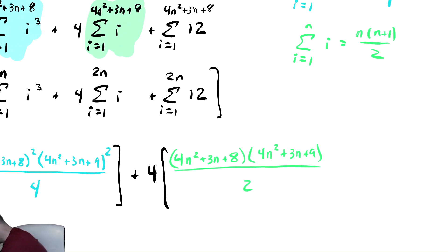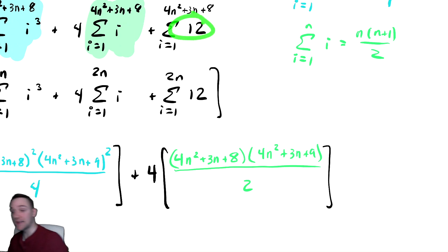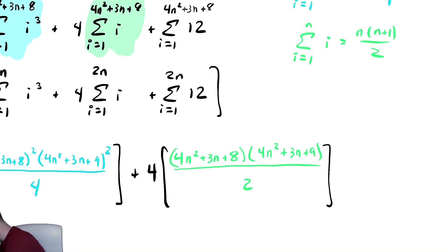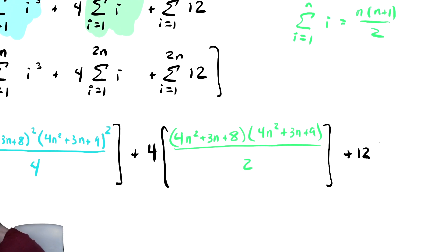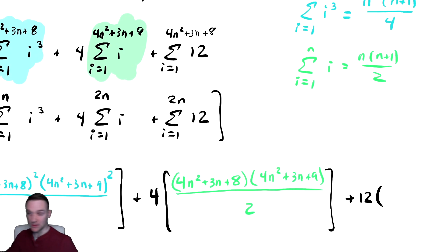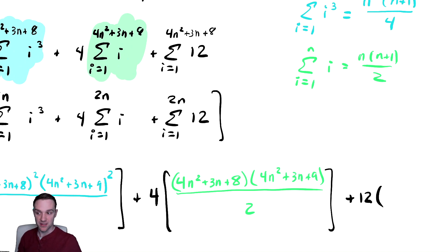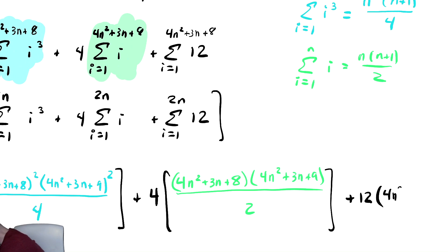We then have one more term before we start subtracting: the constant 12. Since it's a fixed quantity, the result is 12 times the number of terms. One reason that starting summations at 1 is beneficial is that the number of terms becomes the top bound of the summation. So the number of terms here is 4n squared plus 3n plus 8.